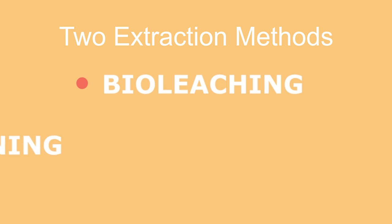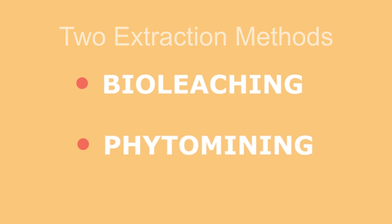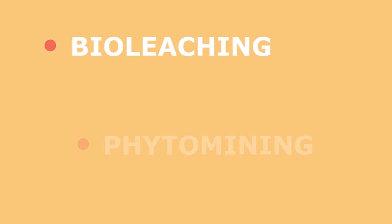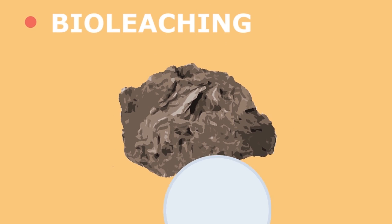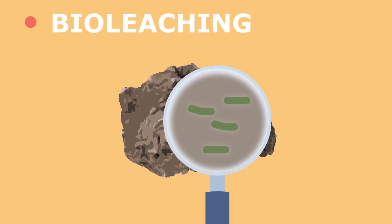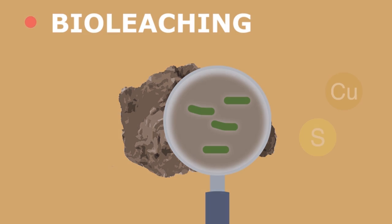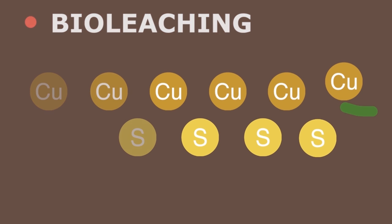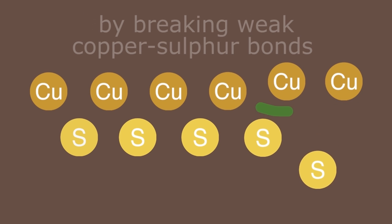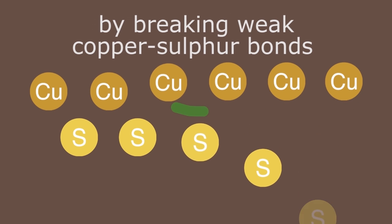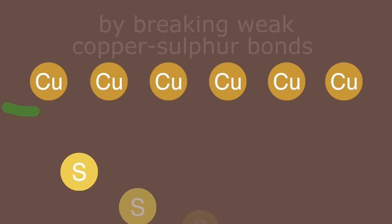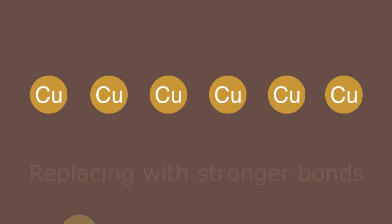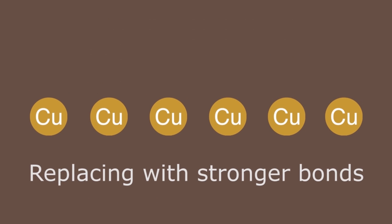There are two extraction methods that are being used and that we will continue to use in the future. These include bioleaching and phytomining. Bioleaching is a method of extracting copper metal using bacteria. Some bacteria can live off the energy provided by breaking weak copper-sulphur bonds found in ores and replacing them with stronger bonds.